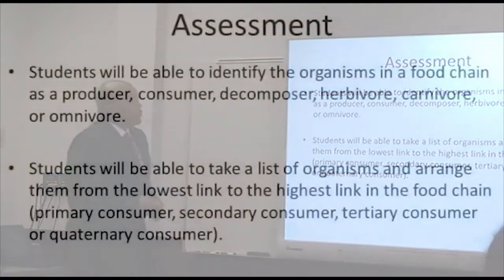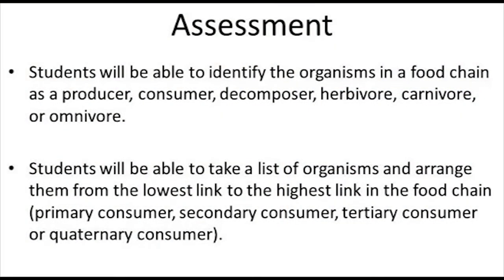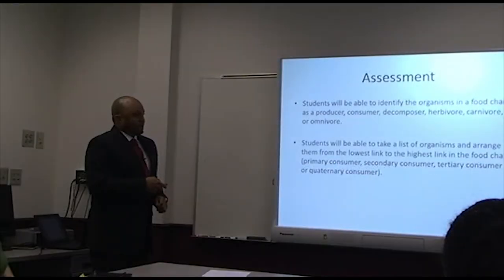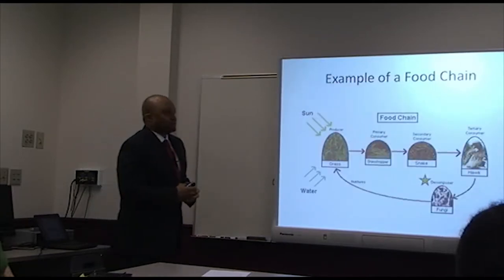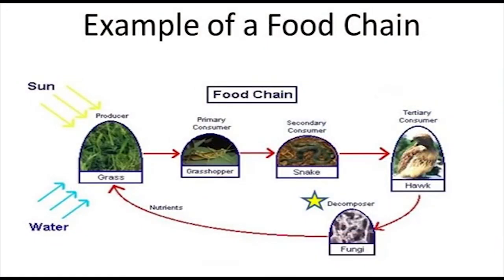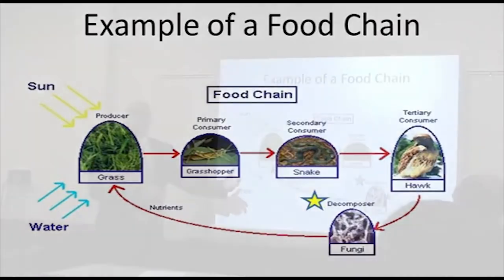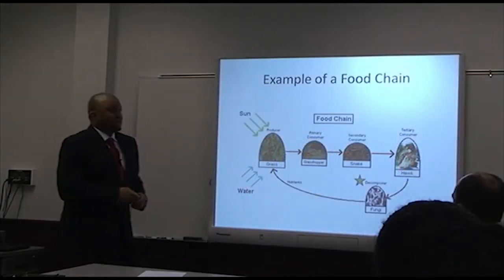Your assessment for today will be to identify organisms in the food chain as a producer, consumer, decomposer, herbivore, carnivore, or omnivore. Additionally, you will arrange a list of organisms from the lowest to highest link in a food chain as primary, secondary, tertiary, or quaternary consumer. This is an example of a food chain you will work with today — we've identified components including primary consumer, producer, secondary consumer, tertiary consumer, and decomposer. You will also label herbivores and carnivores in the diagram.